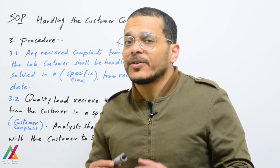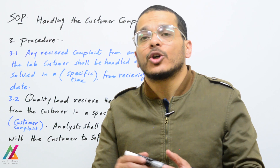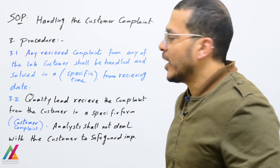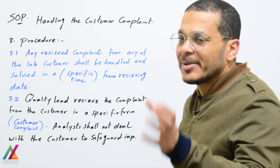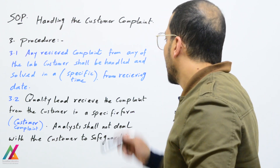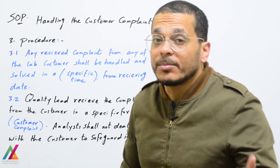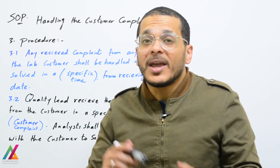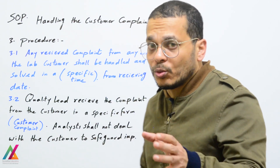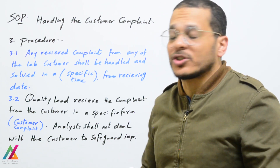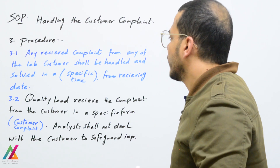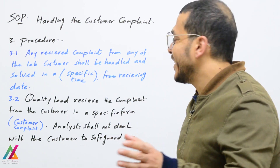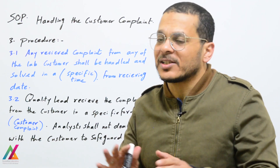Time frame is very important. You shall determine a specific time to solve any complaint. Any received complaint shall be handled and solved within a specific time, determined from the receiving date — it can be 15 days or up to one month. However, for some complaints you shall finish very fast because they may affect the customer's facility or work. The specific time — 15 days or up to one month — shall be defined in the SOP.